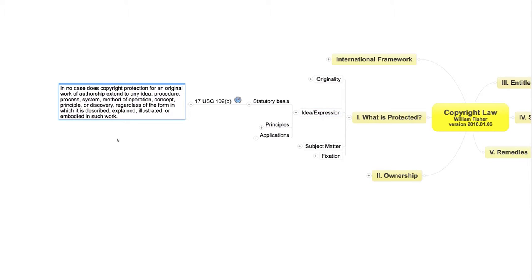Section 102B provides: "In no case does copyright protection for an original work of authorship extend to any idea, procedure, process, system, method of operation, concept, principle, or discovery." Some scholars, such as Professor Pam Samuelson, argue that this provision reaches more broadly than the idea-expression distinction, but I'll put that controversy aside for the time being.